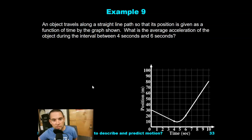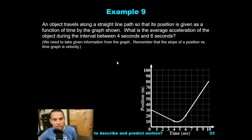An object travels along a straight line path. So its position is given as a function of time by the graph below. So, what is the average acceleration of the object during the interval between 4 and 6 seconds? Looking for the average acceleration. So we're going to have to use the graph to get our given information. Remember, as soon as you're presented with a graph, the first thing you're going to look at is the axis. In this case, it's a position and time graph.